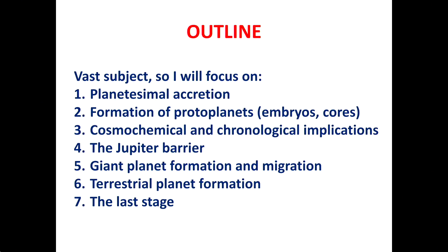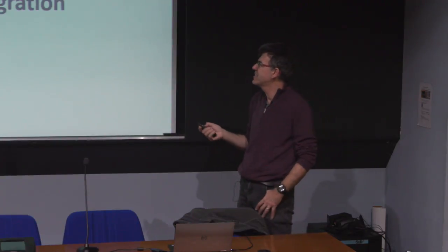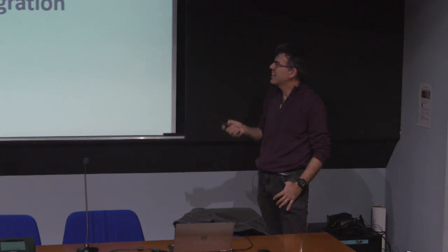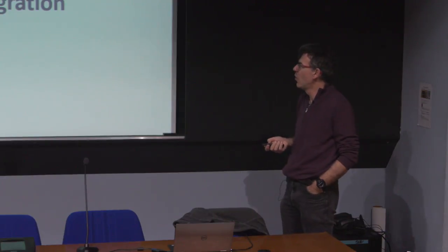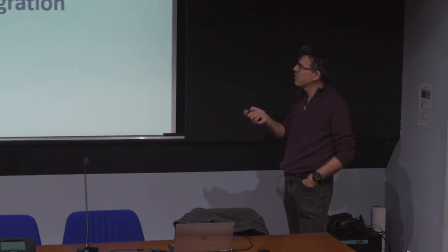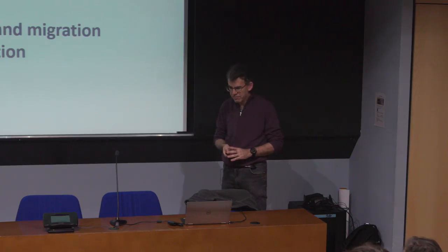We'll speak first about planetesimal accretion, which has been a long-lasting mystery for many decades but on which we finally have some breakthroughs, though it's still an open research issue. Then the formation of protoplanets — the cores of the giant planets or the sub-Earth planetary embryos that eventually gave origin to the terrestrial planets. I would like to make a connection with cosmochemical constraints and show how we can explain them using the concept of the Jupiter barrier. Then we will speak about the formation of the giant planets and their migration, the formation of the terrestrial planets, and the last stage that gave the solar system the structure we know today.